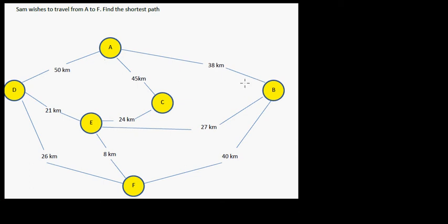Sam wishes to travel from A to F, find the shortest path. So this is A, and he wants to travel from A to F. What's the shortest path? There are different ways in which he can reach from A to F, and we want to find the shortest.